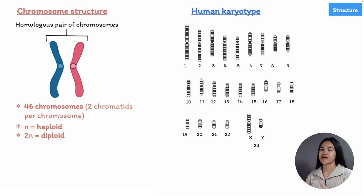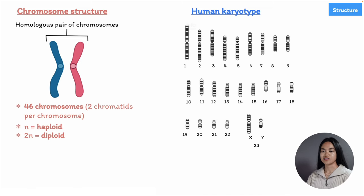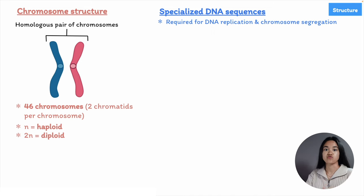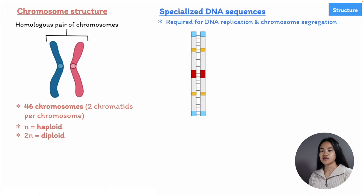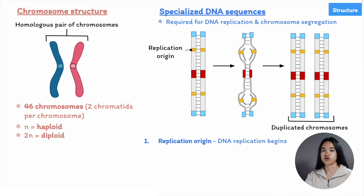Chromosomes organize and carry genetic information — they carry genes, which are the basic functional units of heredity. Not only do they carry genes, but these DNA molecules must also be able to replicate and be prepared to distribute equal copies into two daughter cells. These processes are controlled by three types of specialized nucleotide sequences in the DNA, required for DNA replication and chromosome segregation. The first sequence is called a replication origin — this is where DNA replication begins — and there are many replication origins to allow DNA replication to occur rapidly.